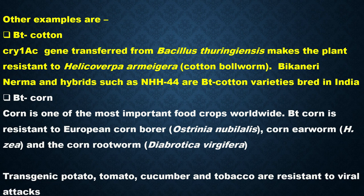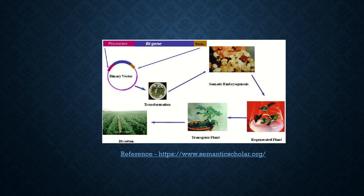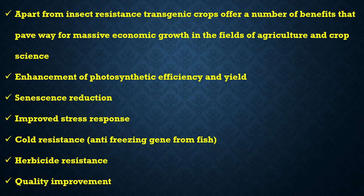Apart from insect resistance, transgenic potato, tomato, cucumber, and tobacco have also been made resistant to viral attacks. This is how Bt cotton is produced: the gene of interest is incorporated in a binary vector, transformation occurs, followed by somatic embryogenesis, and then regeneration. As discussed earlier, the regenerated plant gives rise to the transgenic plant, which is then taken out for field growth.